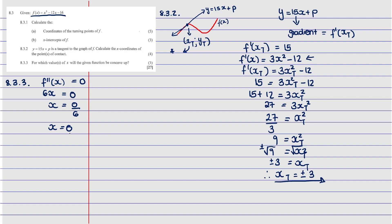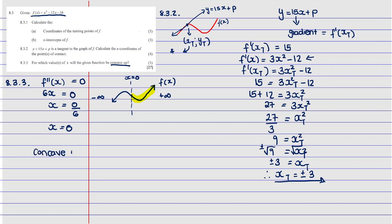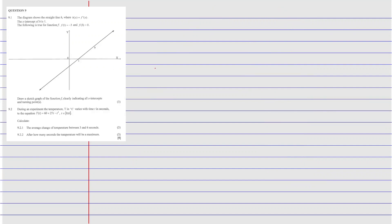Looking at the cubic graph, we know the point of inflection is where the graph changes from concave up to concave down, which occurs at x = 0. To the right of zero the graph is concave up. Therefore, the function is concave up for x ∈ (0, +∞).